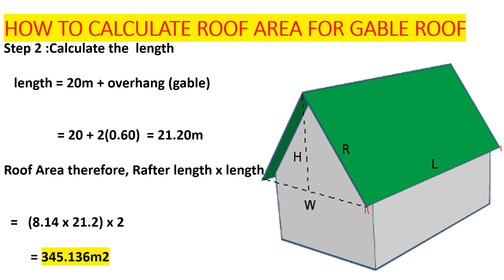Therefore, the roof area equals the rafter length times the new length, multiplied by 2 for both sides: 8.14 × 21.2 × 2 = 345.136 square meters. That is how we calculate the roof area for a gable roof. Thank you for your time and support — until next time, bye bye!